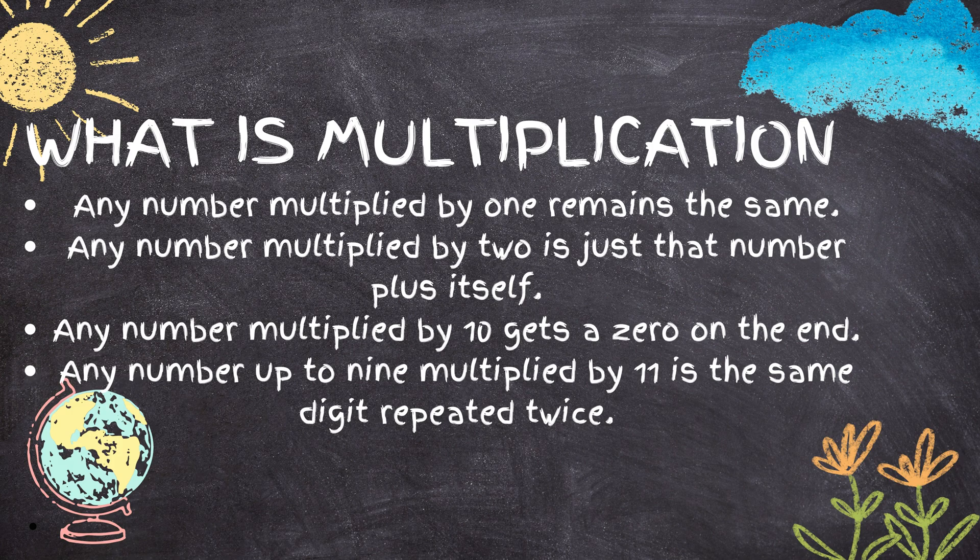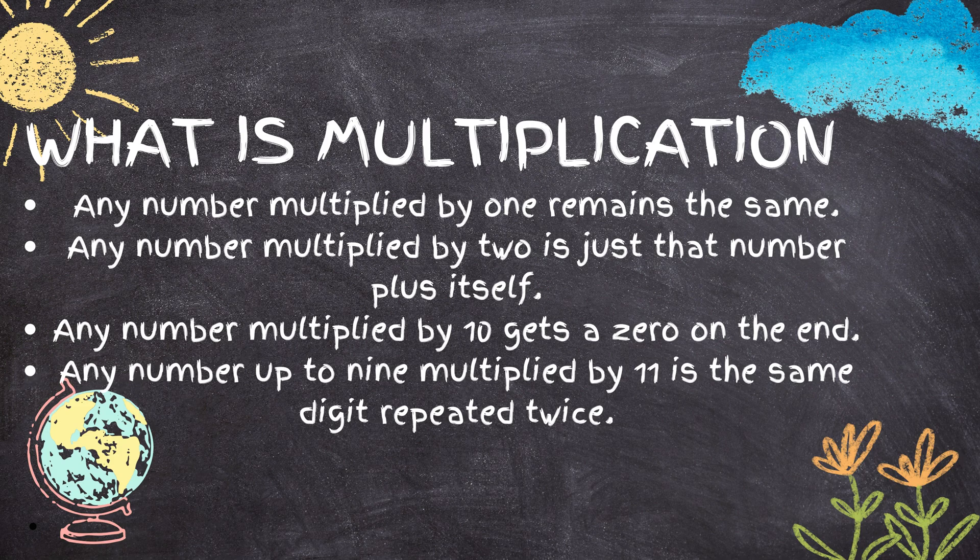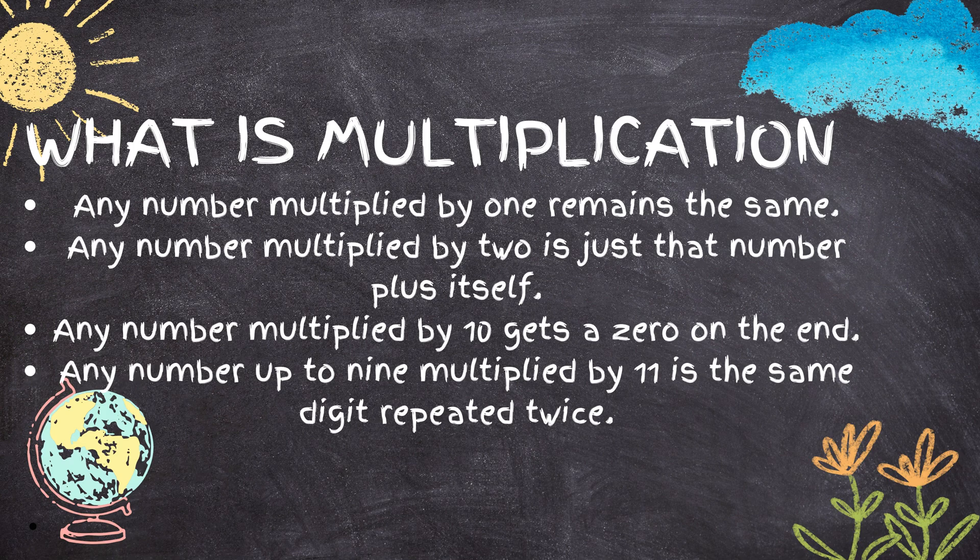What is multiplication? Any number multiplied by 1 remains the same. So 1 times 2 equals 2. 1 times 100 equals 100.